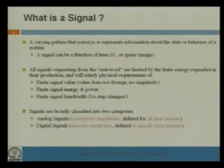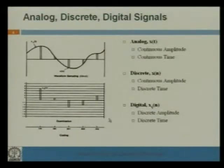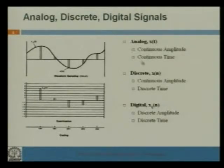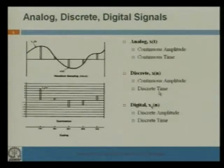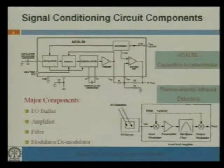Signals are broadly classified into two categories: analog signals, which have continuous amplitude and are defined for all time instances, and digital signals. An analog signal is continuous in amplitude — it can take any amplitude and is continuous in time, so at every time instant you can get an amplitude. A discrete-time signal is continuous in amplitude but discrete in time. A digital signal is both discrete in amplitude and discrete in time, having specific digital signal levels depending on your digitization steps.